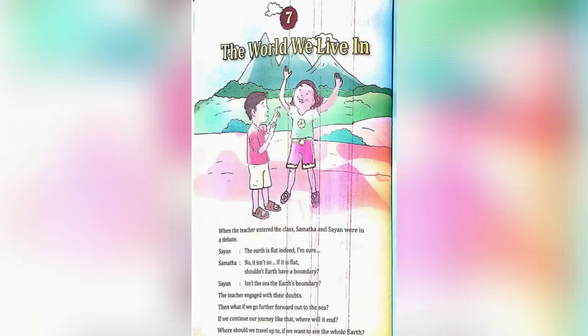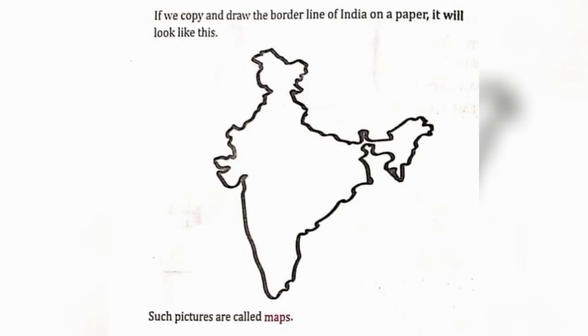Lesson 7: The World We Live In. If we copy and draw the borderline of India on a paper, it will look like this. Such pictures are called maps.